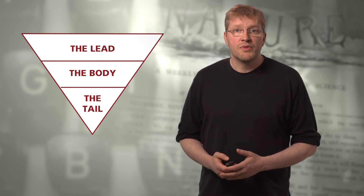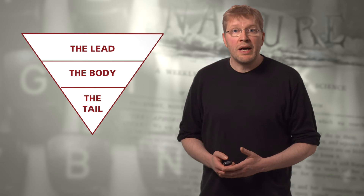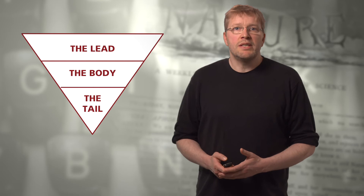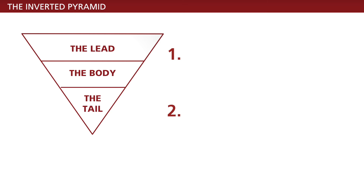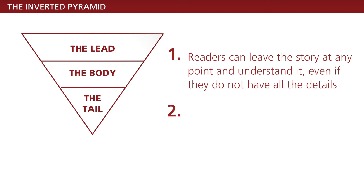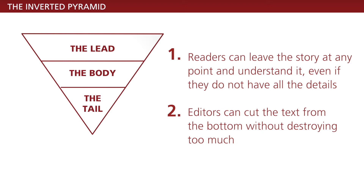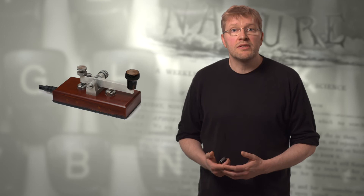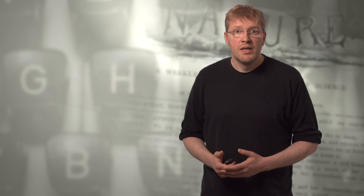The tail contains all the rest, which is nice to have but expendable, and is read by less than 10% of all readers who see the title. The purpose of such a structure is twofold. First, readers can leave the story at any point and still understand it even if they do not have all the details. Second, if there's not enough space in the newspaper, editors can cut the text from the bottom without destroying too much. In fact, the inverted pyramid has its origin in telegraph reporting in the 19th century, where limited time and space created a strong need for an effective and low-cost type of communication.